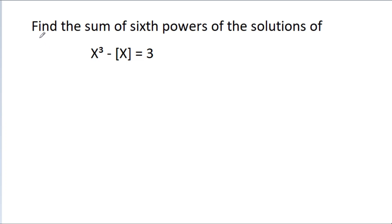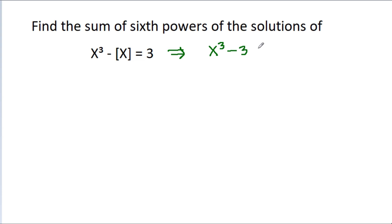In this video, we have to find the sum of sixth powers of the solutions of x cubed minus greatest integer of x is equal to 3. From here, we can get x cubed minus 3 is equal to greatest integer of x.